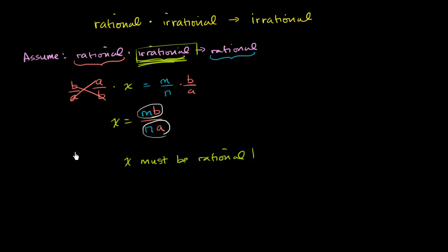And so therefore, since this assumption leads to this contradiction, this assumption must be false. It must be that a rational times an irrational is irrational.